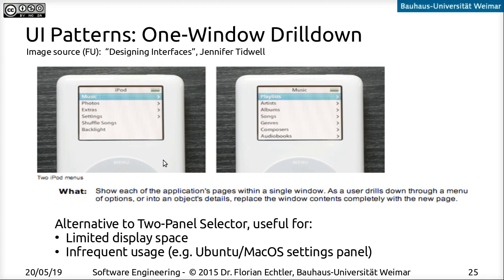For this to work properly, you need some sort of back button or undo button to step back in the hierarchy. This is a pattern you see on virtually any smartphone interface. You also see it for things you don't use so often — for example, the settings panel in Mac OS or Ubuntu uses a one window drill down where you select more and more specific option menus displayed in a single window. It's used there not because screen space is limited, but simply because it's something you don't use quite as often.